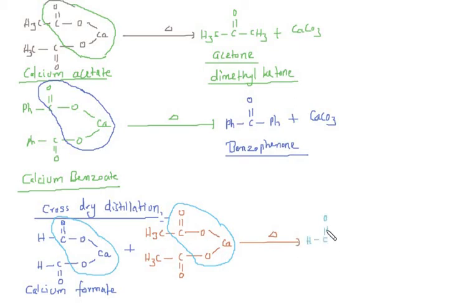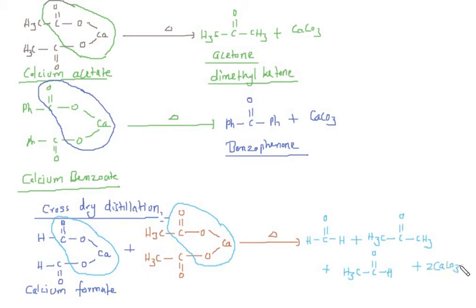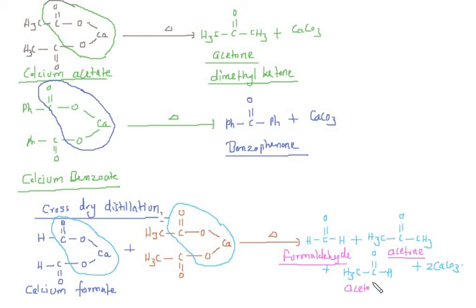The products of this cross dry distillation are three: H–C(=O)–H (formaldehyde), CH₃–C(=O)–CH₃ (acetone, also called dimethyl ketone), and CH₃–C(=O)–H (acetaldehyde, also called ethanal). So there are 3 products in total, along with 2 moles of calcium carbonate.